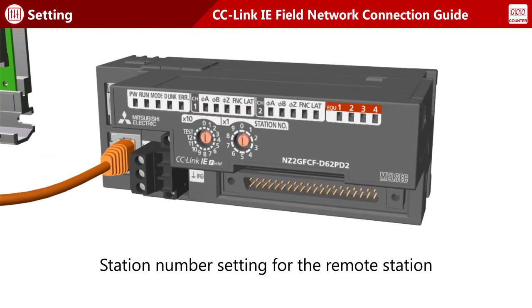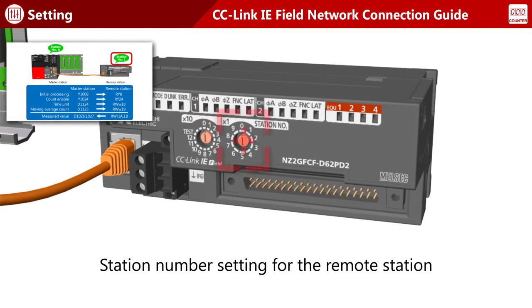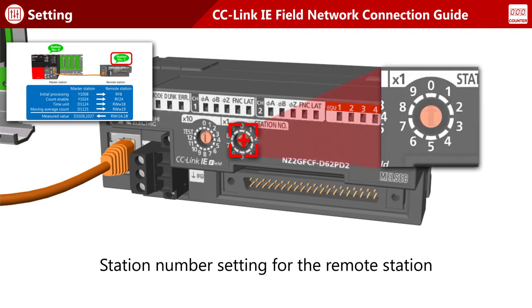Station numbers for remote stations are set using the switch on the front of the module. The remote station is station number one, so set the station number to one using the single digit switch.